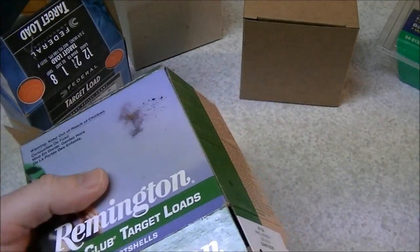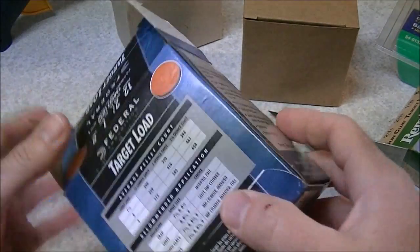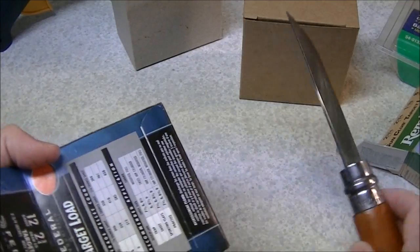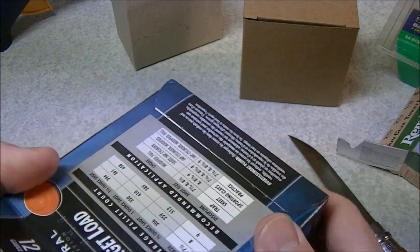So basically all we're going to do is sort of disassemble the box, cut the seams off and after we've done that we will reassemble it with some hot glue.